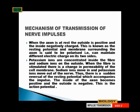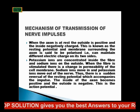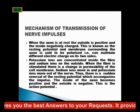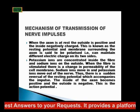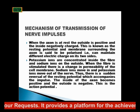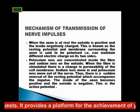When the axon is at rest, the outside is positive and the inside is negatively charged — this is known as the resting potential. The membrane surrounding the axon is said to be polarized, meaning it can maintain different electric charges on its two sides, both inside and outside. Potassium ions are concentrated inside the fiber and sodium ions on the outside.